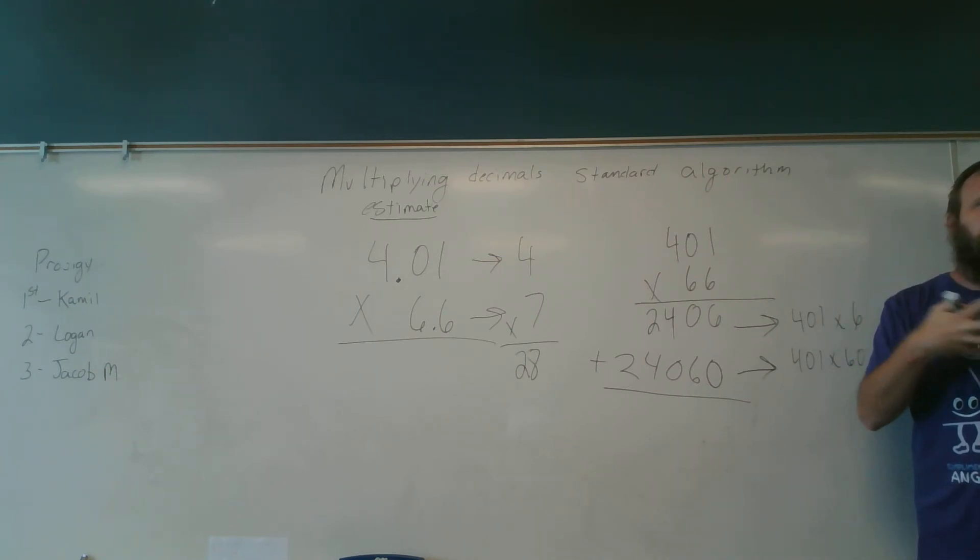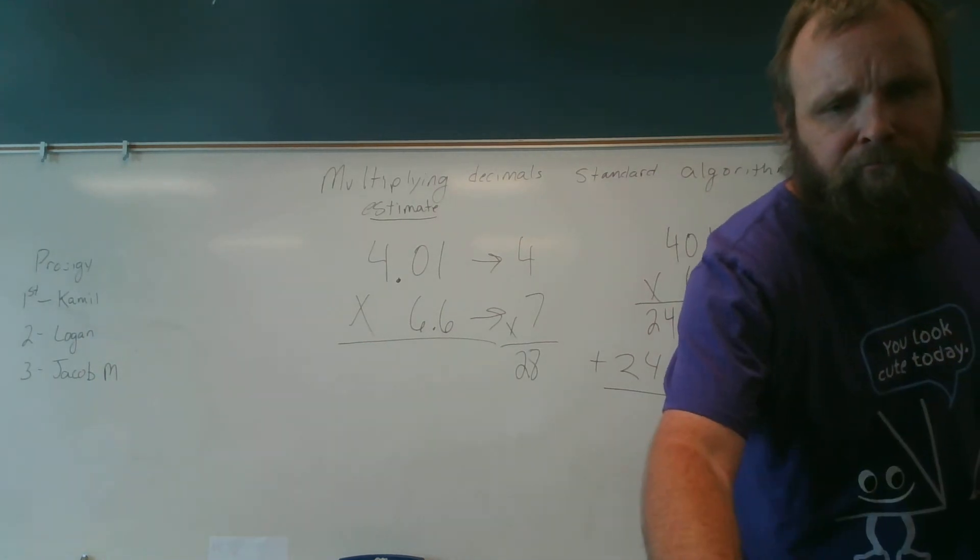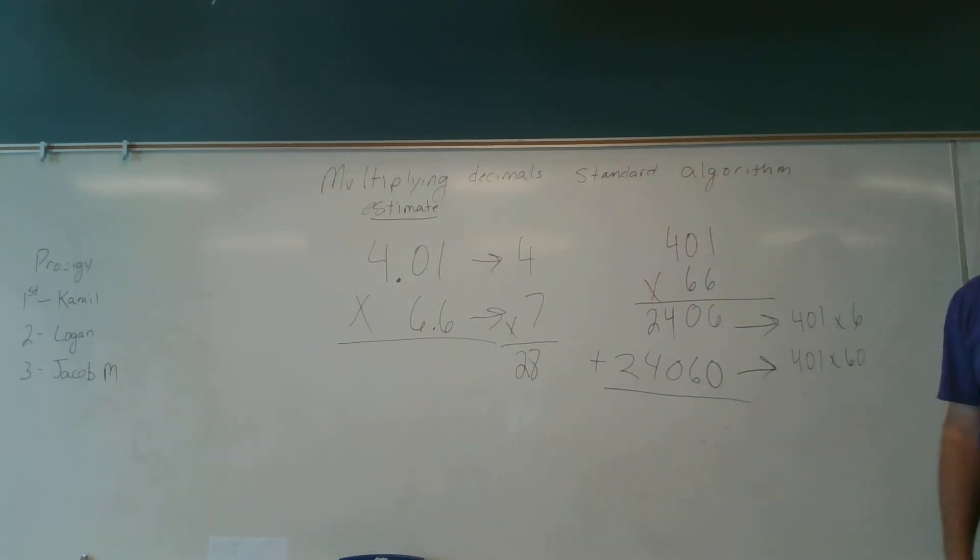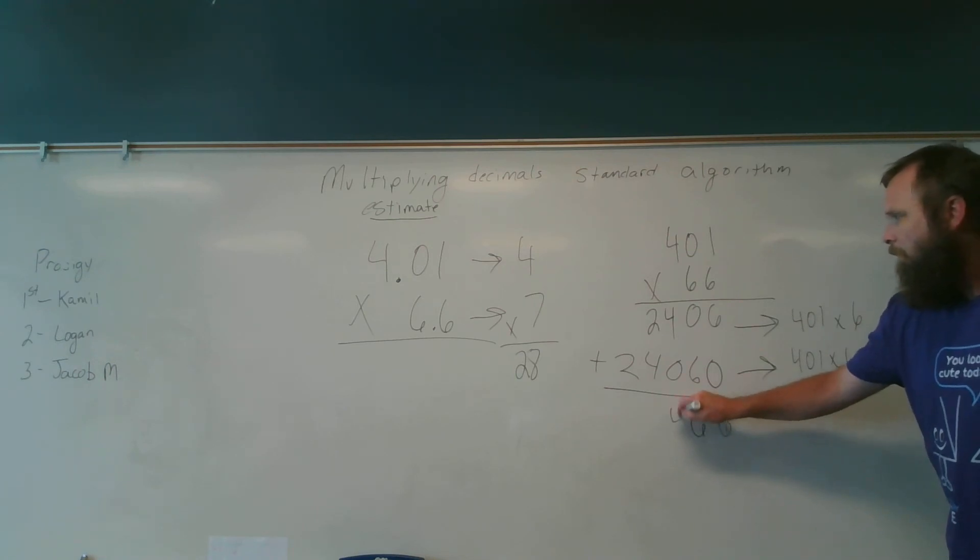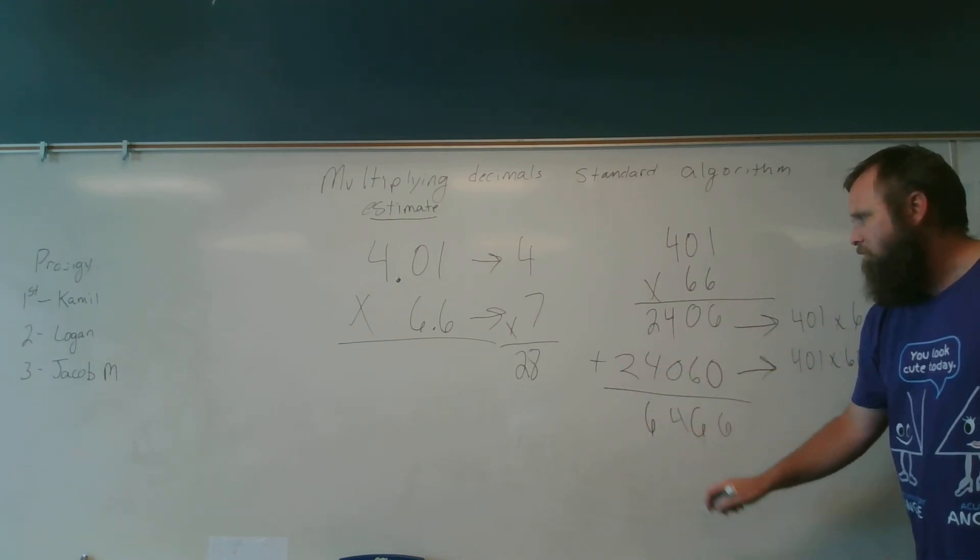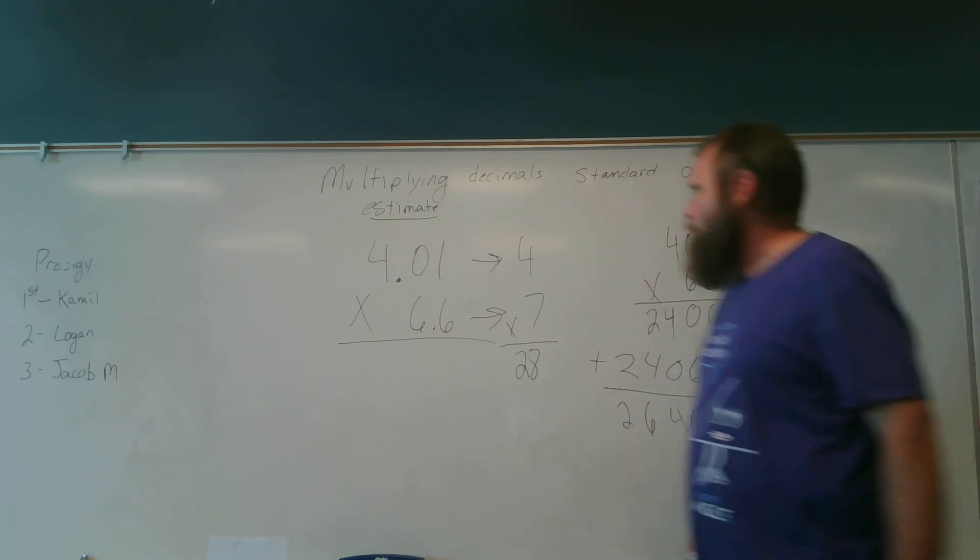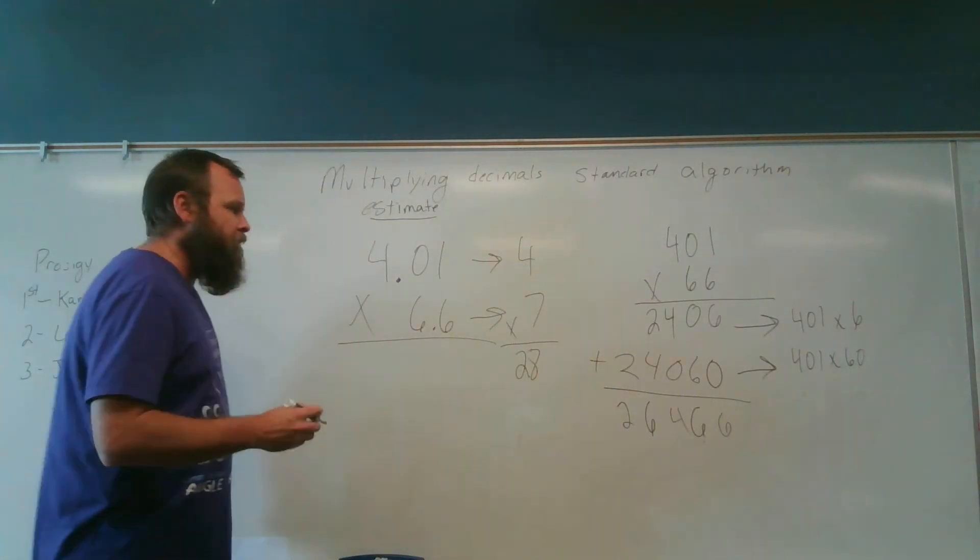Noah, are you with me writing all this stuff down? Awesome sauce. Matthew, help me find the sum of these two products. 6 plus 0 is 6. 0 plus 6 is 6. 4 plus 0 is 4. 4 plus 2 is 6. 2 plus nothing else is 2. So my product, these are the digits in my product: 2, 6, 4, 6, 0.